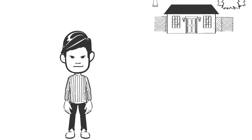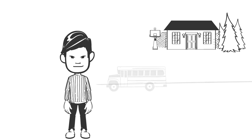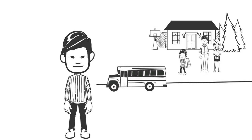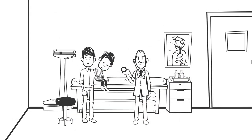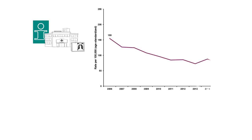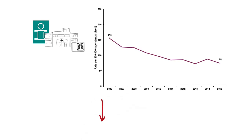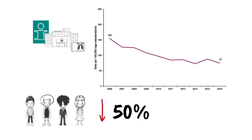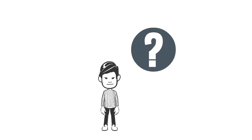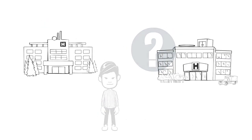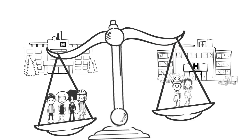Meet Eddie. He lives in a low-income neighborhood where he is excited to start grade one so he can ride the bus to school. He's just been hospitalized with asthma for the third time this year. Analysis by the Canadian Institute for Health Information, also known as CIHI, shows that hospital admission rates for asthma have on average dropped by 50% over the past decade. This is a good thing. But what about Eddie? What if we told you that some children are admitted to hospital more often than others?